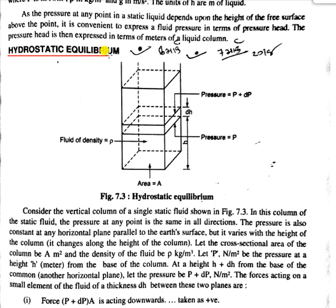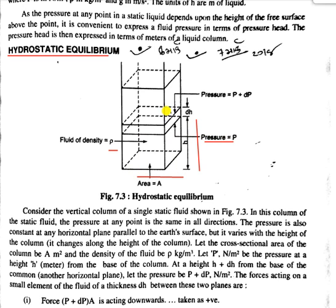So, hydrostatic equilibrium. As shown in the figure, here is the area and a vertical square column in which fluid is filled. In the hydrostatic equilibrium, consider a point at height H with a cross-sectional area of DH. At that point, the fluid density is rho, area is A, pressure is P, and at the outer part of the DH section the pressure is P plus dP.